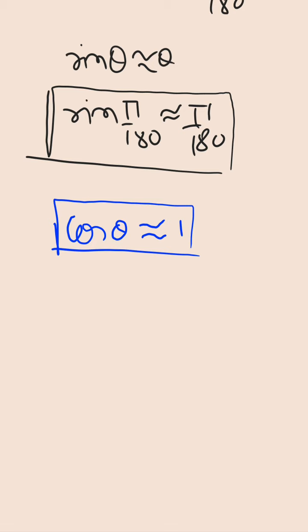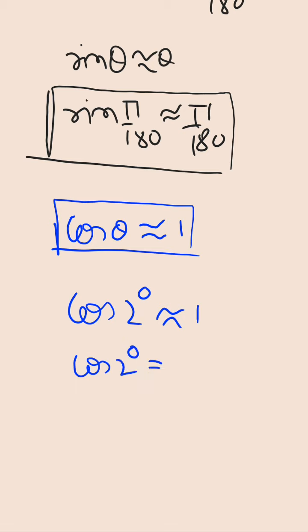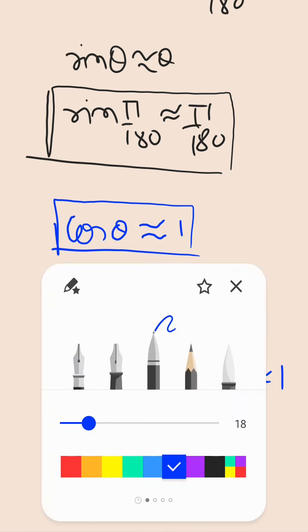For example, if we are asked the value of cos 2 degrees, we can write it directly equal to 1, because 2 degrees is less than 5 degrees. There is no need to elaborate further — cos(2°) = cos(2π/180 radians) ≈ 1. So the approximations are: cos theta ≈ 1 and sin theta ≈ theta, where theta is in radians. We should always take care of the unit.